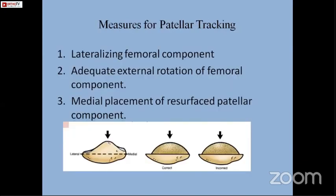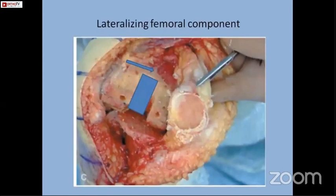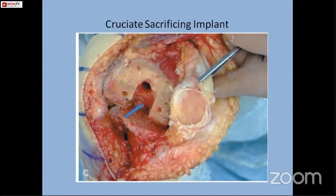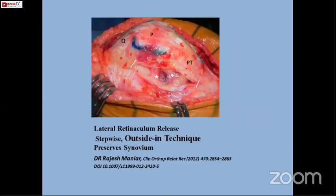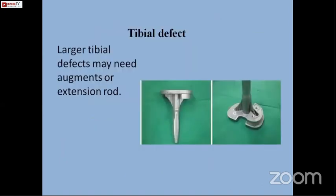A few words about patellar tracking. Patellar tracking can be improved by lateral distalization of the femoral component — the box cut should be lateralized. For this, we need to use a posterior cruciate-sacrificing implant so that we can adjust the box cut medially or laterally. We also medialize the patellar component so it fits perfectly on the trochlea, reducing chances of patellar dislocation. Even after all this, if there is patellar maltracking, the outside-in technique is very handy — you cut only the retinaculum while the inner synovial layer remains intact, covering the implant. In larger tibial defects, augments and extension rods are always preferable.